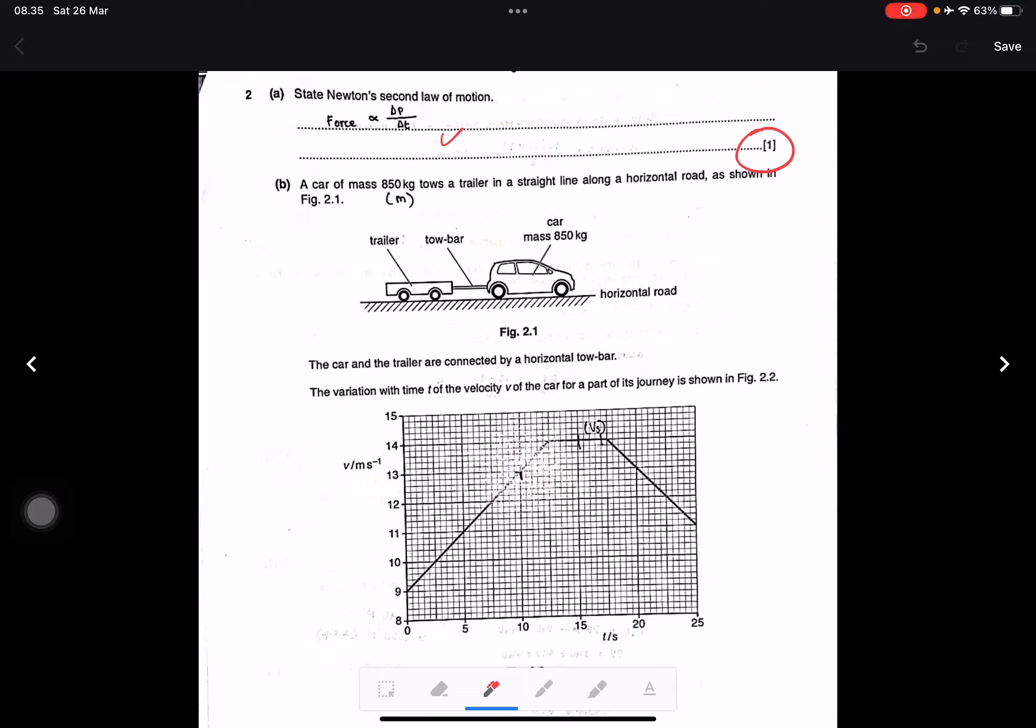A car of mass 850 kilograms tows a trailer in a straight line along a horizontal road. The car and trailer are connected by a horizontal vertical towbar. The variation with time t of the velocity v of the car is shown in figure 2.2. They have acceleration from zero to 12.5 seconds, then constant speed from 12.5 to 17.5 seconds, and deceleration after that until time 25 seconds.